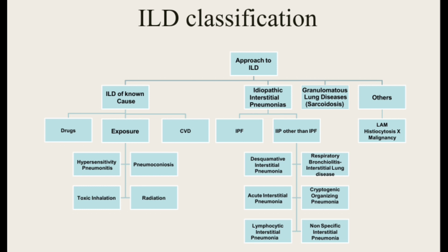When no cause is found, ILD is classified as idiopathic interstitial pneumonitis, subdivided into IPF — which has classical features — and six other ILDs: DIP, RBILD, COP, acute interstitial pneumonia, lymphocytic interstitial pneumonia, and non-specific interstitial pneumonia. If granulomatous inflammation is seen on biopsy, it is called granulomatous lung disease, with sarcoidosis as a key example.